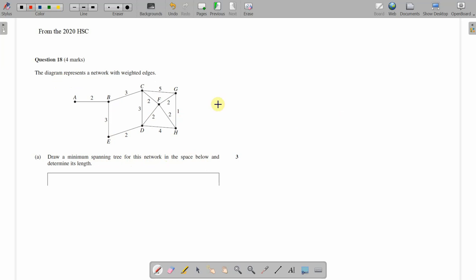So minimum spanning tree, well firstly a tree covers vertices, it has no loops, no repeated edges, no cycles. There are the three things we're going to look out for, that's a tree.